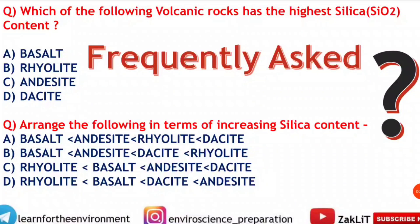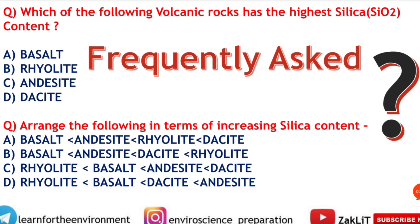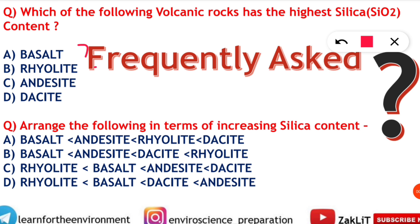Hello everyone and welcome back to Zacklead Educational Channel. In this video we are going to learn a trick to remember one of the very frequently asked questions in the environmental science examination. This question is also asked in geographical and environmental geology examinations. For example: which of the following volcanic rocks has the highest silica content (SiO₂)? The options given are basalt, rhyolite, andesite, and dacite.